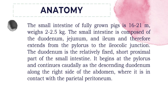The duodenum is the relatively fixed short proximal part of the small intestine. It begins at the pylorus and continues caudally as the descending duodenum along the right side of the abdomen, where it is in contact with the parietal peritoneum.